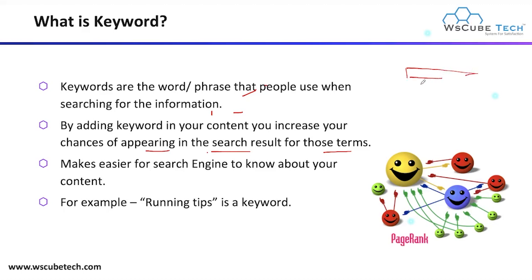If any user enters a particular search term, you can see several results appear. With the help of using that particular term in your content, there is a high chance that your website will rise on the Google search engine results page, making it easier for the search engine to understand your content. Examples of keywords include: running tips, running shoes, running shoes for women, and women's running shoes.